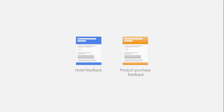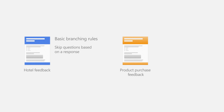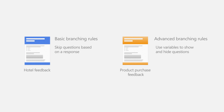For this example, we'll use two surveys. One will use basic branching rules that will skip questions based on a response, and the other will use advanced branching rules that use variables to show and hide questions.